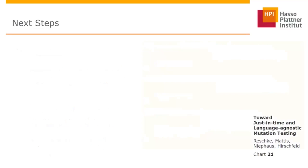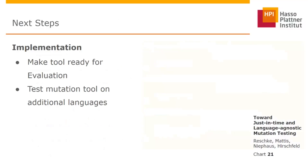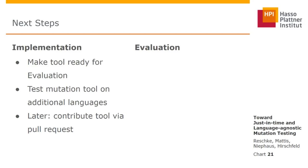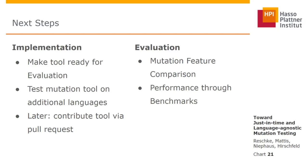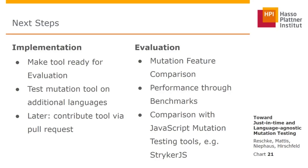Since we only presented initial feasibility results, our next steps on implementation are to make the tool ready for evaluation and potentially add support for additional languages by adding the mutation tags to those languages. Later, we may contribute this tool via pull request to the GraalVM repo so others can profit from it. On evaluation, we want to assess features — the supported mutation operations compared to other mutation testing tools — and performance achievable by mutating on Truffle, with our first candidate for comparison being Stryker.js, a state-of-the-art JavaScript mutation testing tool.